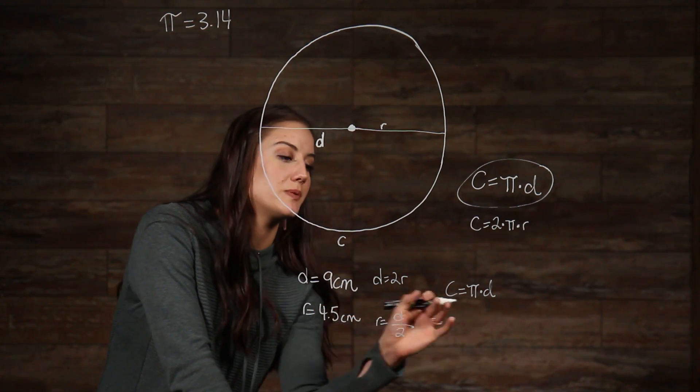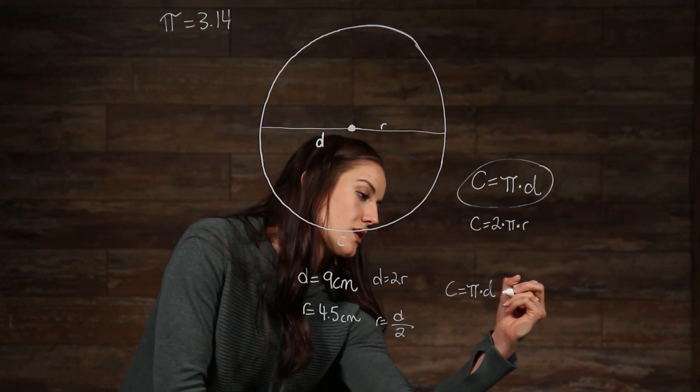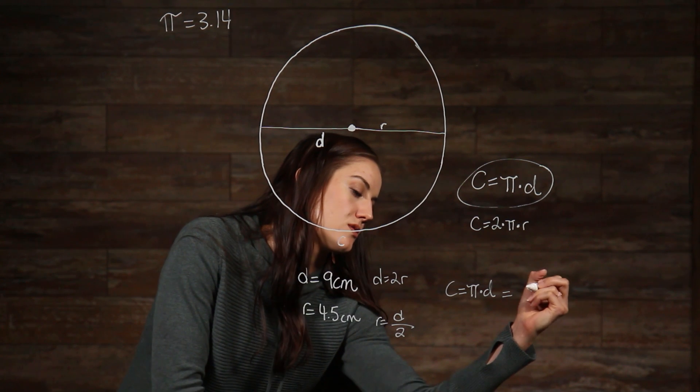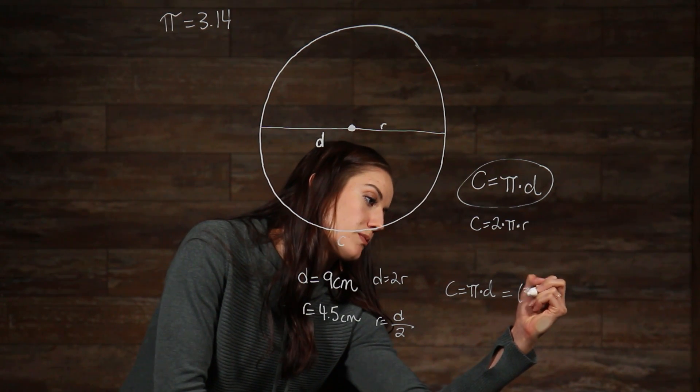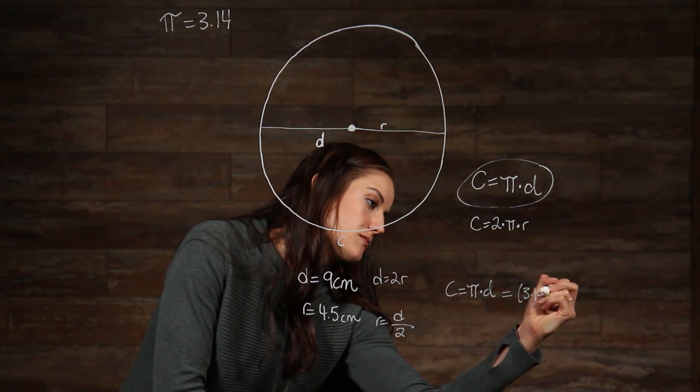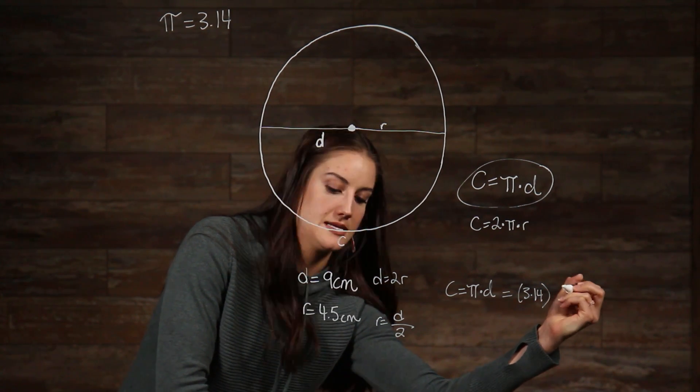This is equal to, and we also said pi was equal to 3.14 times 9 cm, which equals 28.26 cm.